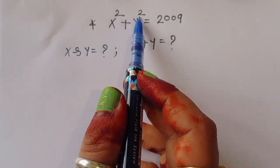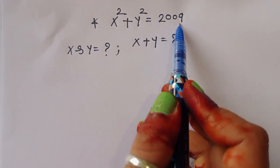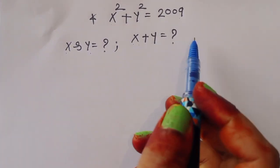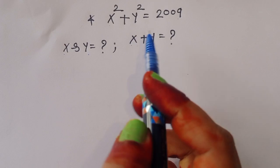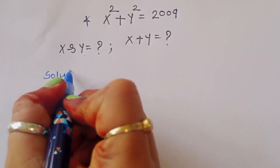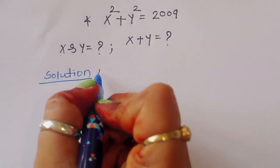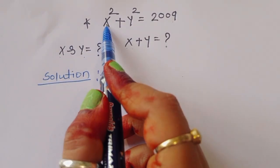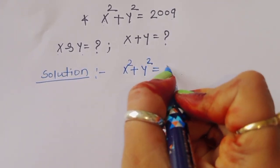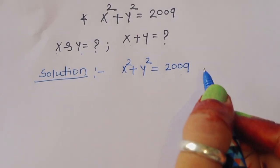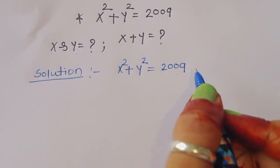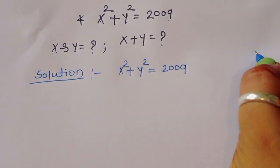The question is: given x² + y² = 2009, we have to find out the value of x and y, and then the value of x + y. Let's see how we can find out the value of x and y and then x + y. First, what is given? x² + y² = 2009. Now we are taking the factor of 2009.